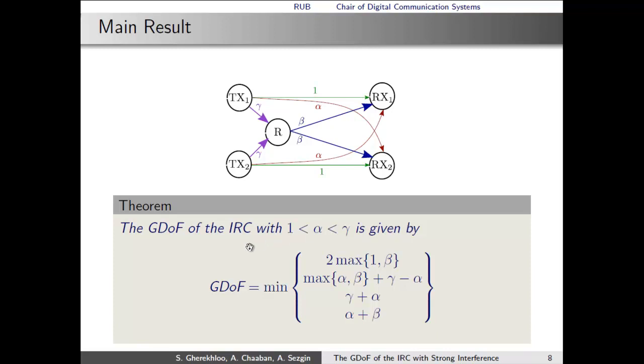The GDoF of the interference relay channel with alpha larger than 1, which means we are in the strong interference regime, and gamma larger than alpha, is given by the minimum of those four expressions. As you can see, by setting beta equal to zero, we obtain the GDoF of the basic interference channel.